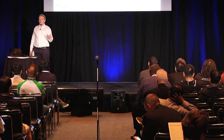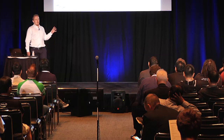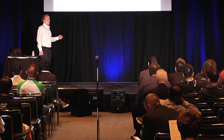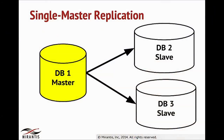Here you can see the first type of replication: single-master-slave replication. When we have a single master and some slaves attached to this master, all slaves are in the read-only state. These types of use cases solve the scale-out via read replicas.